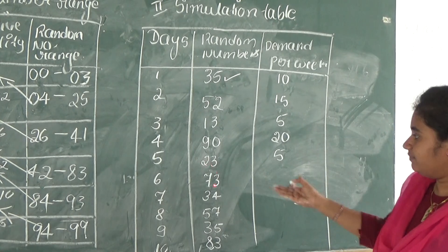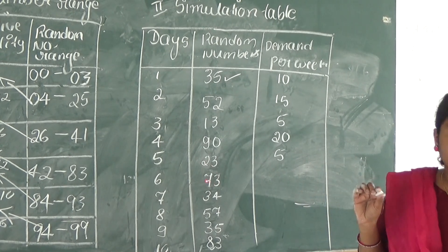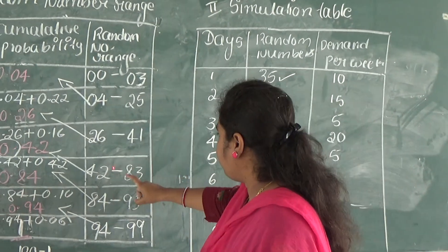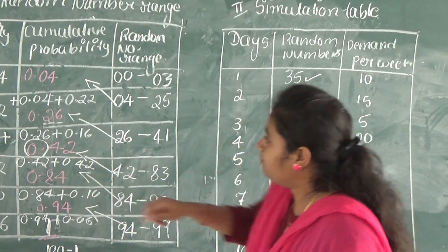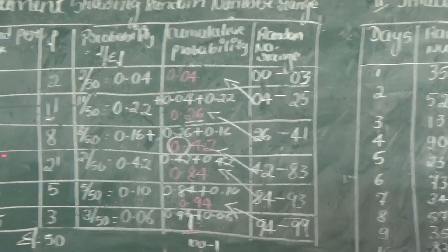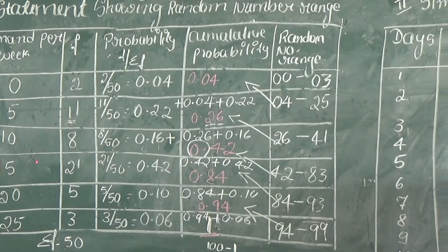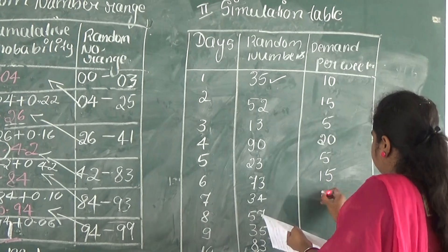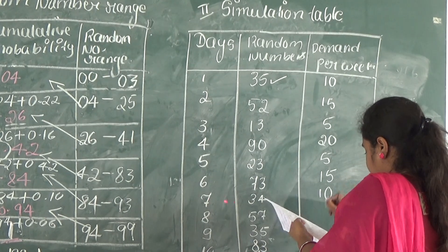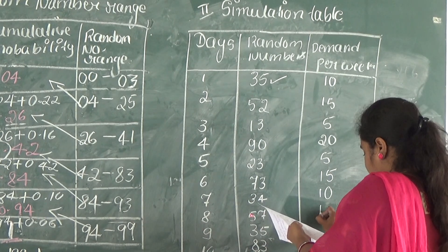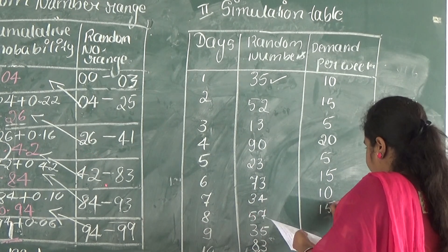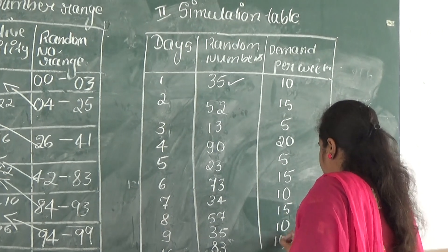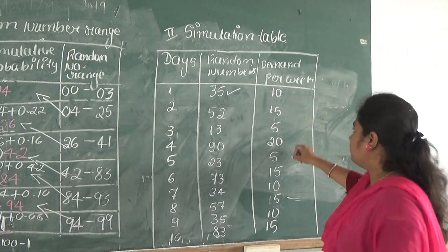The sixth random number is 73 — falls in range 42–83, demand per week is 15. The seventh is 34 — falls in range 26–41, demand per week is 10. The eighth is 57 — falls in range 42–83, demand per week is 15. The ninth is 35 — falls in range 26–41, demand per week is 10. And the tenth is 83 — falls in range 42–83, demand per week is 15.